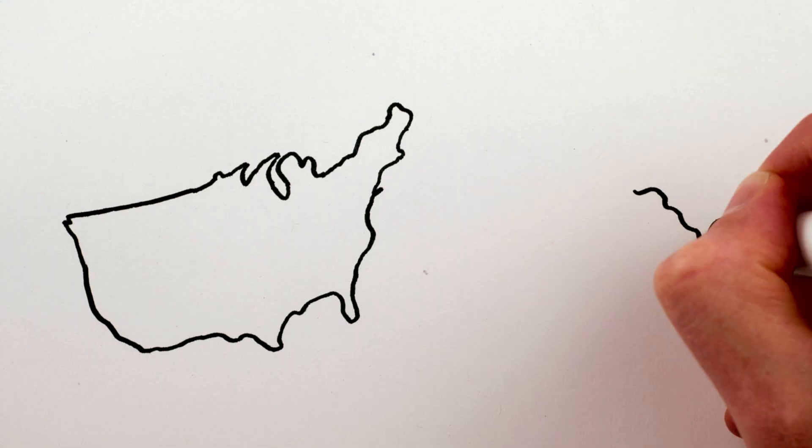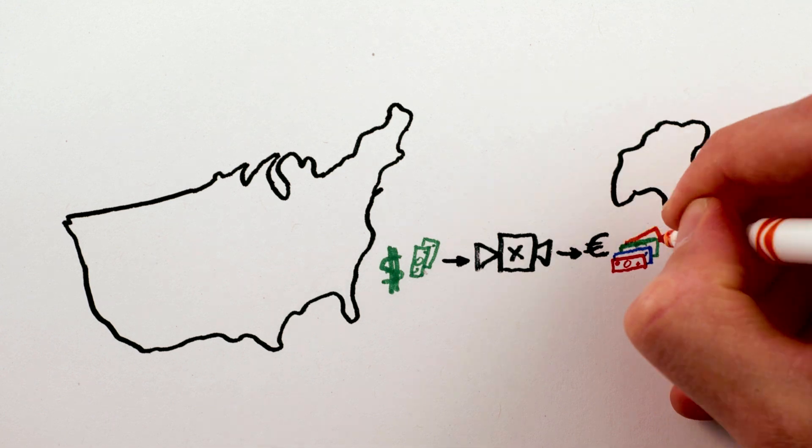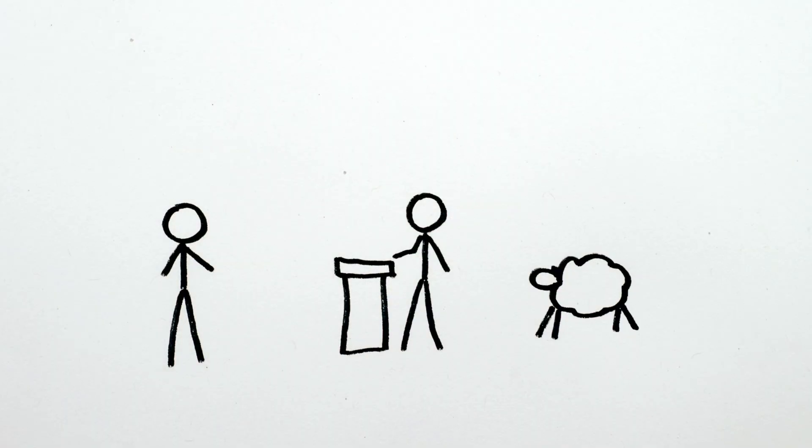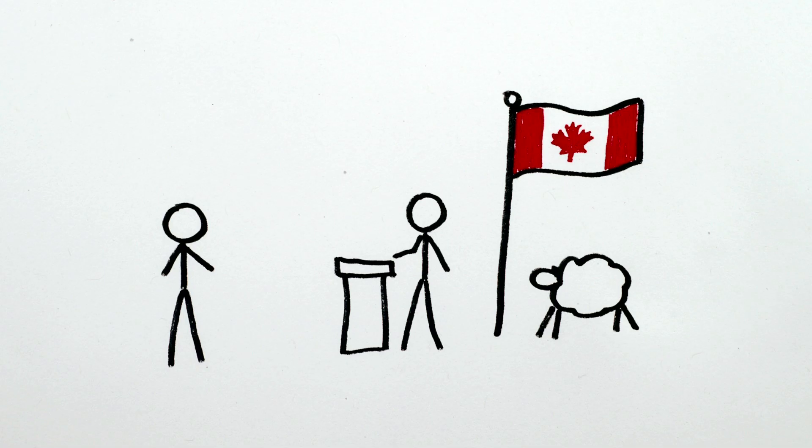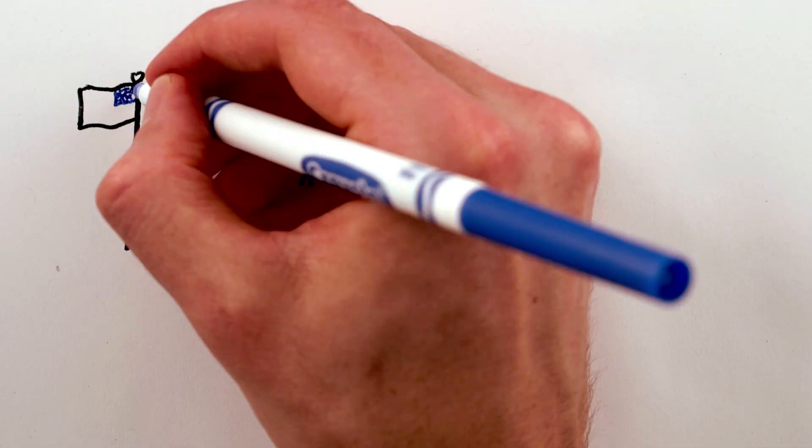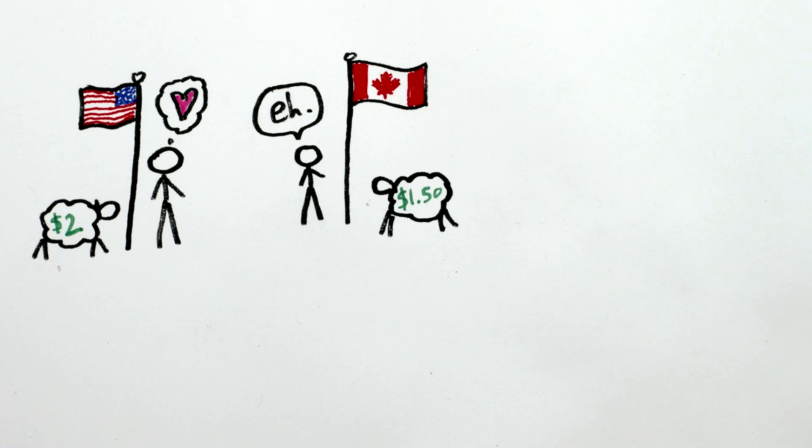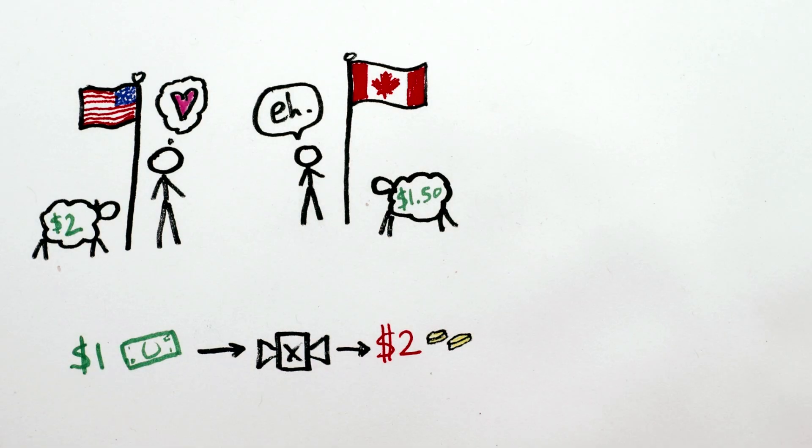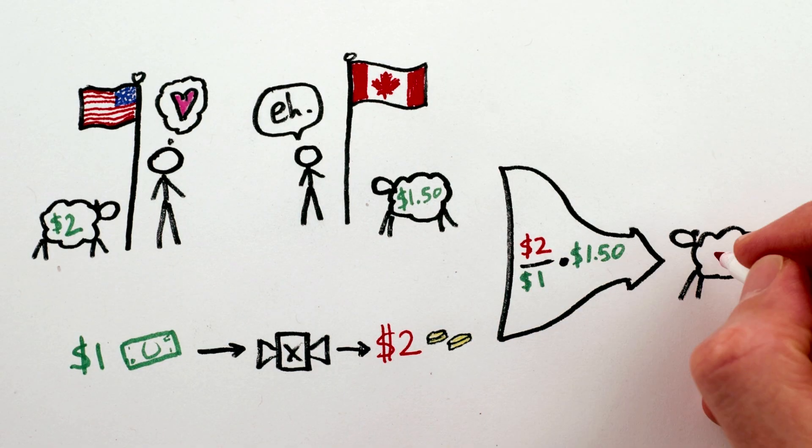Which is obvious when you remember that different countries have different currencies. But of course, countries can't interact financially without converting the way they measure value. So now suppose I want to buy a sheep in Canada. There are two things that will affect the price. First, Canadians may just value sheep less than I do. And second, their dollar may be different from my US dollar. So, perhaps the sheep will only cost $3 Canadian.